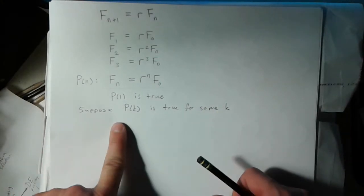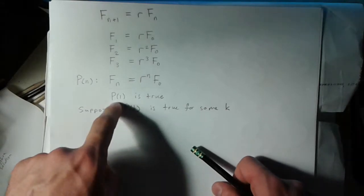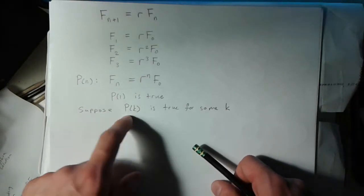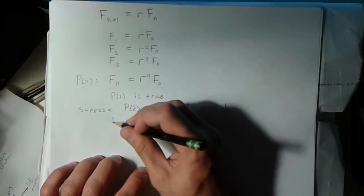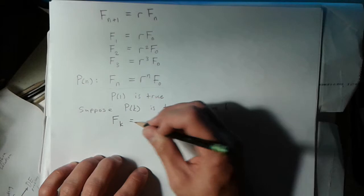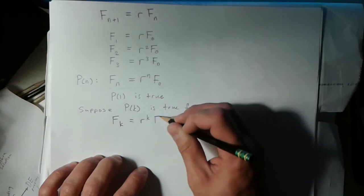This is an okay thing to assume because we already know the first one is true, and we're just saying what will happen if one of them is true. What we're assuming is that F_k equals r to the k times F_0, just going off this definition of P(n).